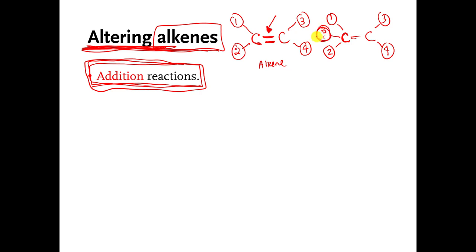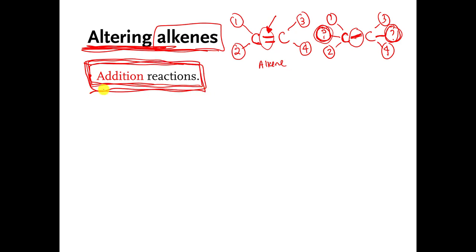I'd have to add something there, and I would also have to add something to the carbon on the right side. And if I do this kind of reaction — if I bust this double bond, turn it into a single covalent bond, and I add two more things on the left and the right — that is called an addition reaction because I'm adding things to those carbons.